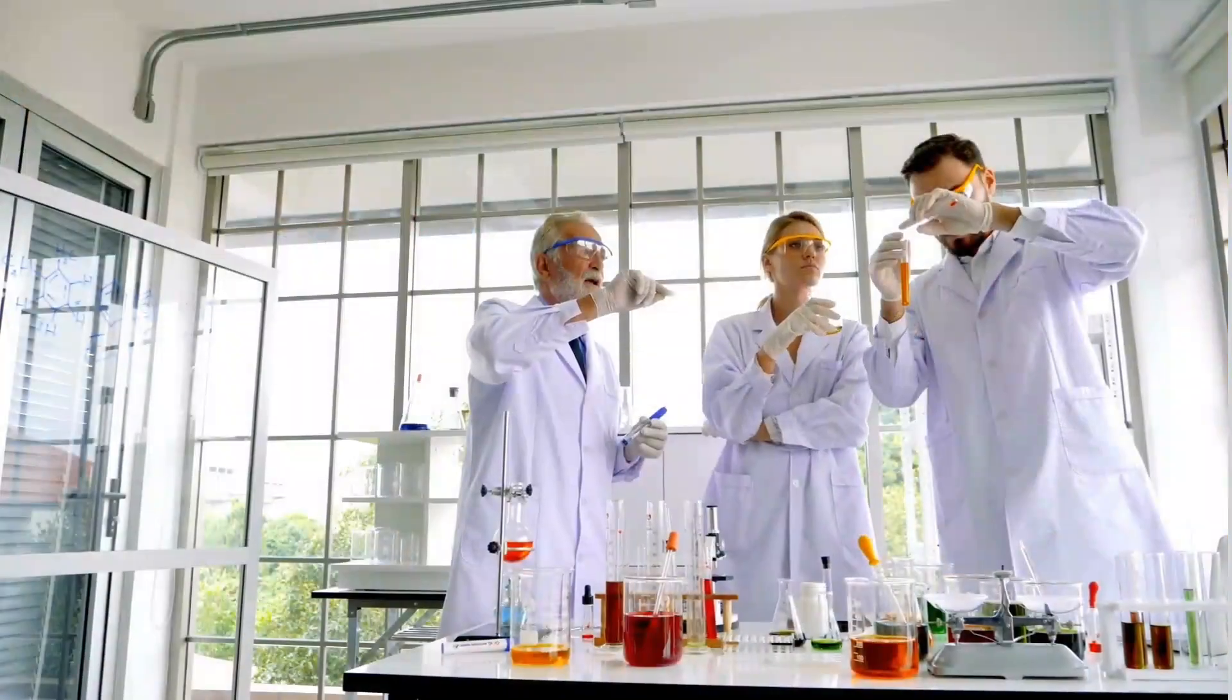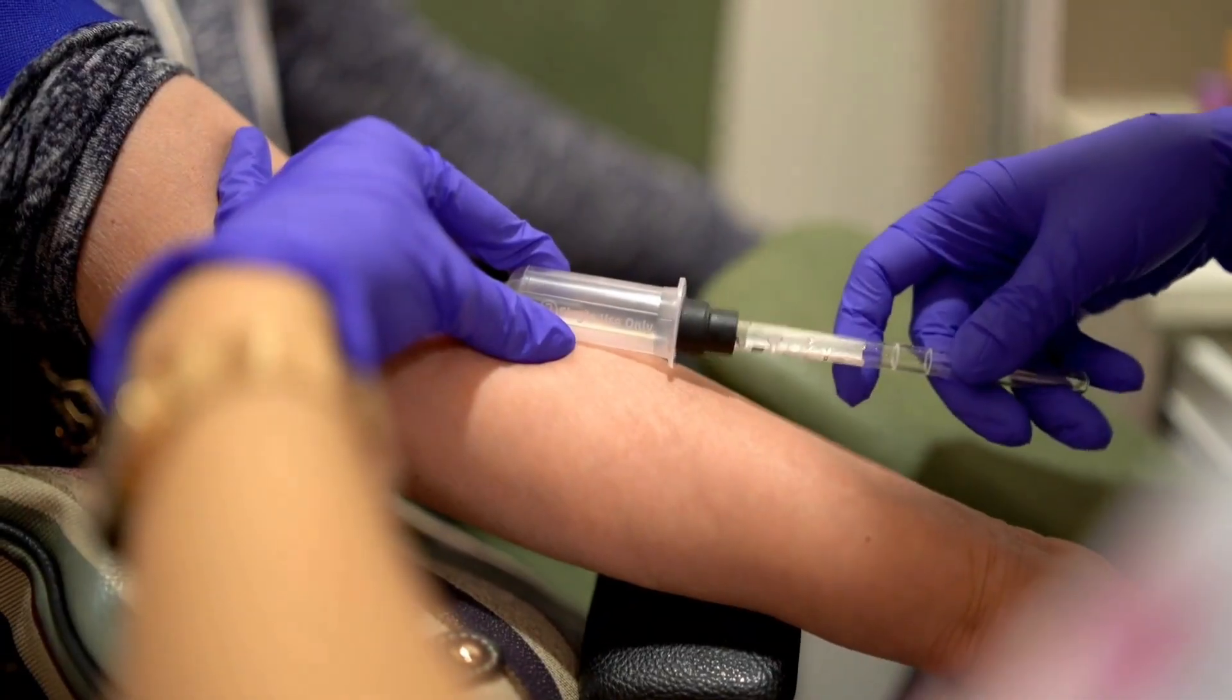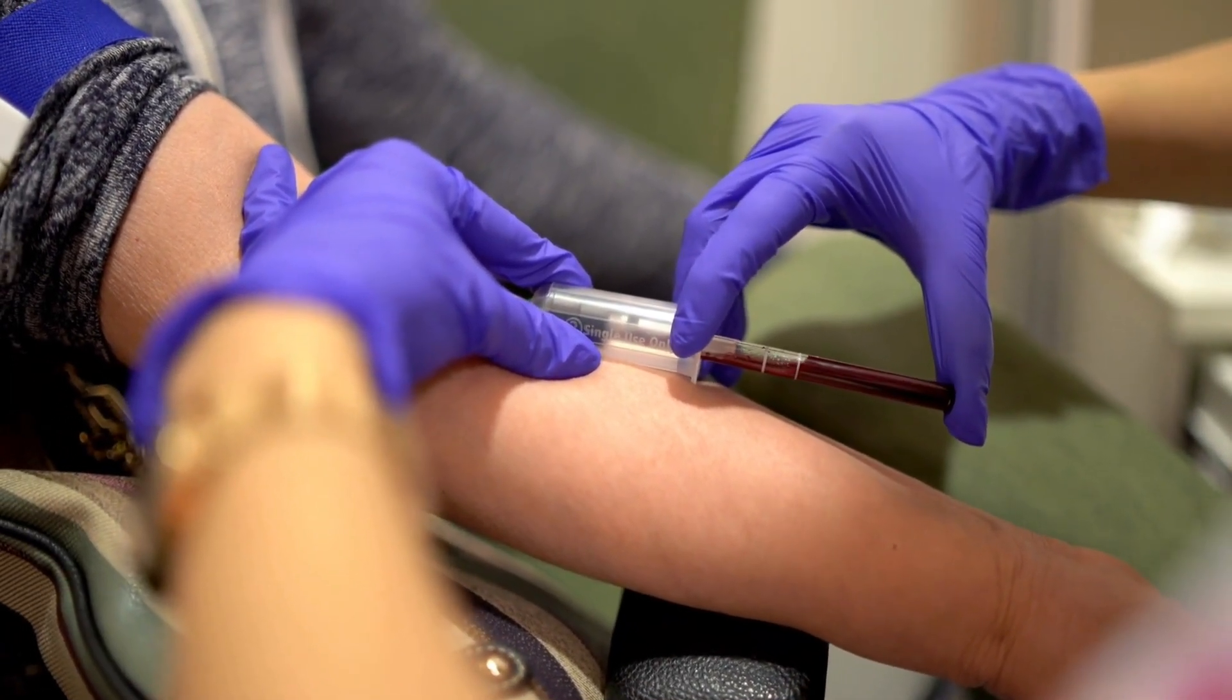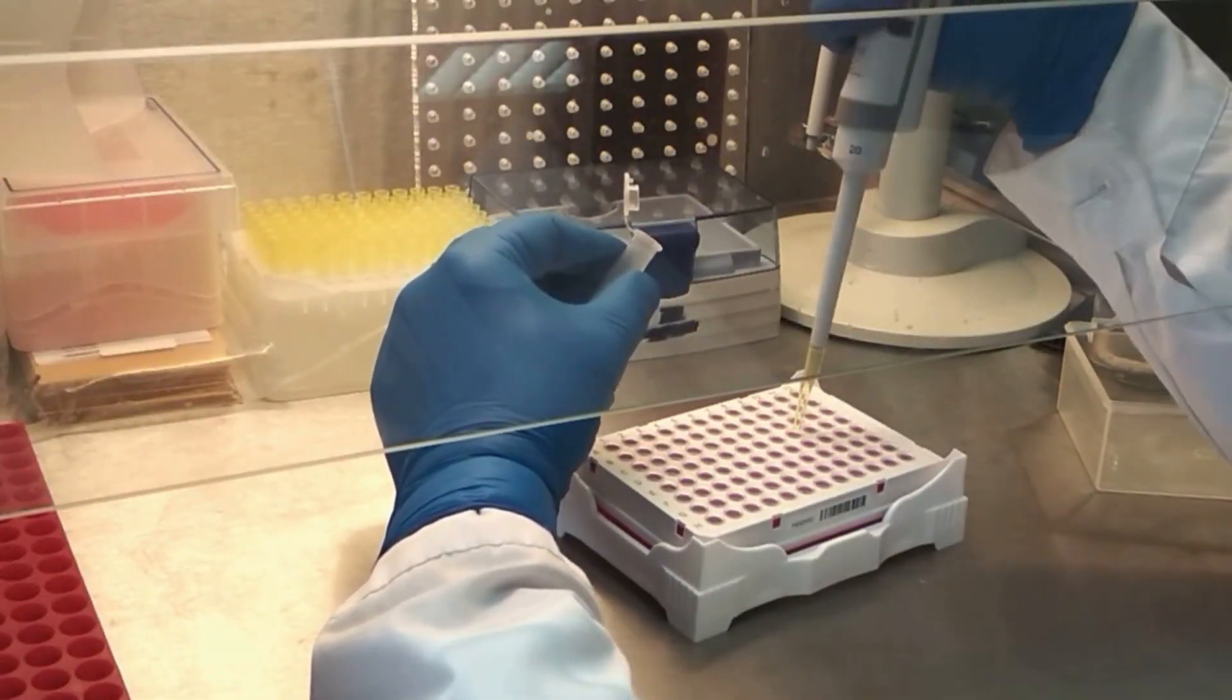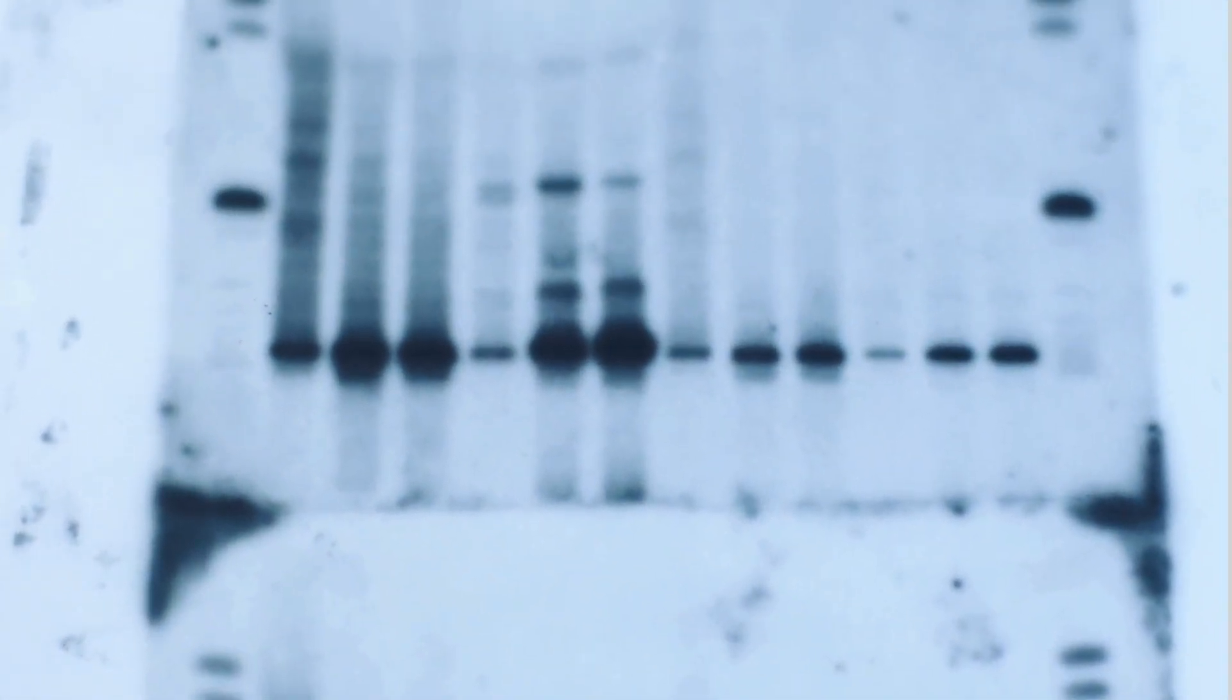But what happens when things don't go according to plan? That's what a team of scientists wanted to find out. They took blood samples from over 4,500 healthy individuals, people just like you and me, and analyzed the mRNA in those samples. Why mRNA? Because it's the key to understanding which genes are active and which are silent.